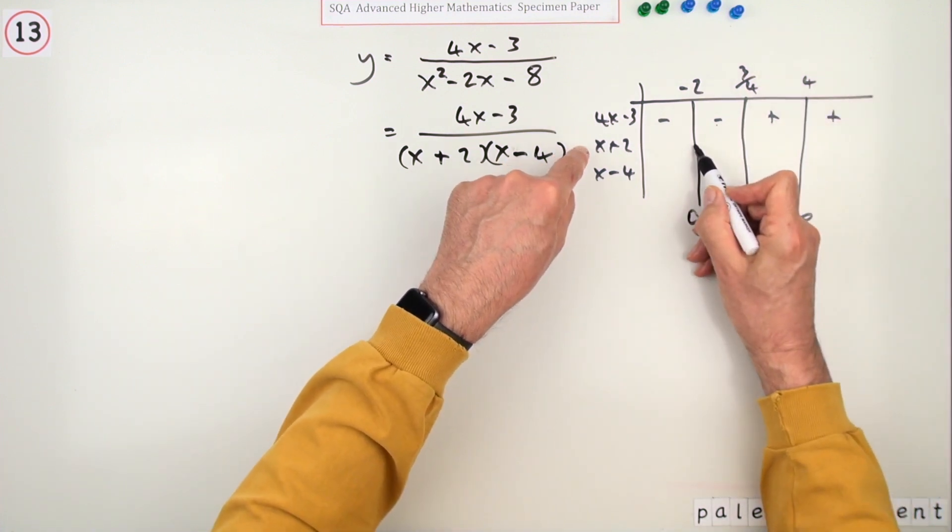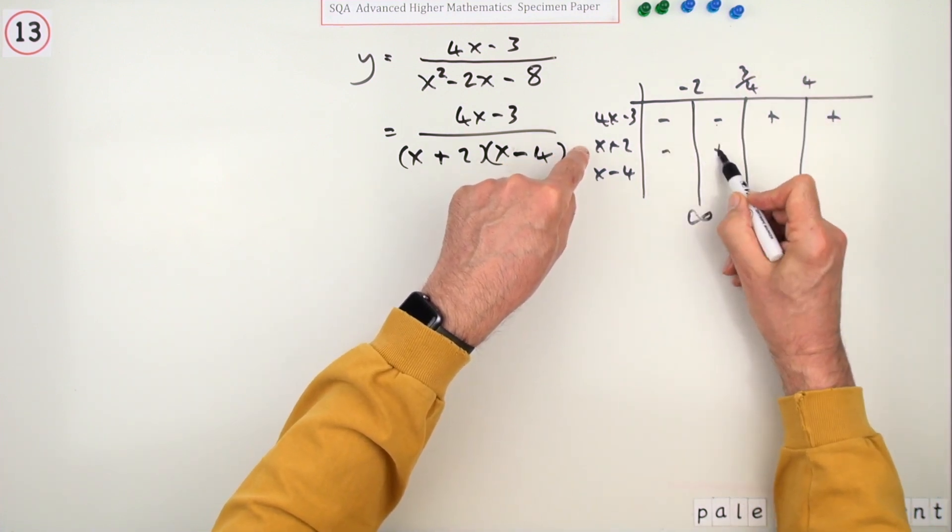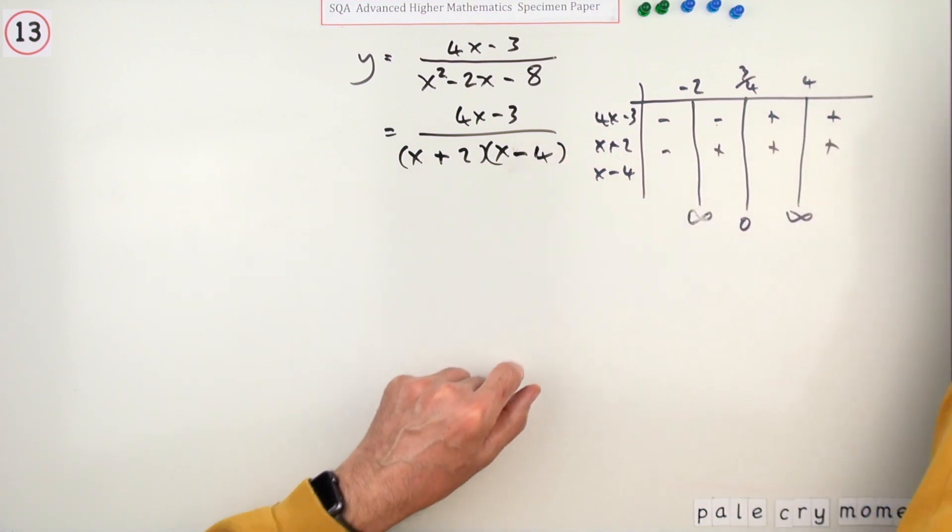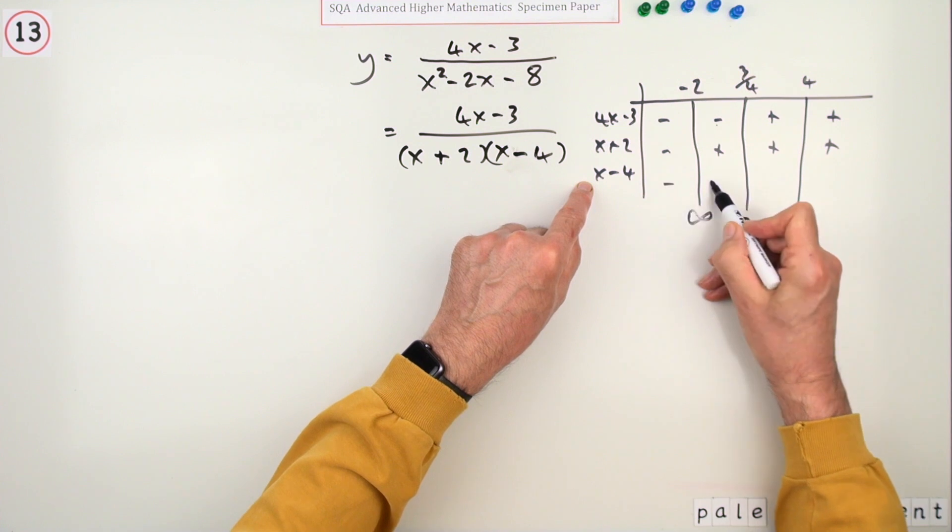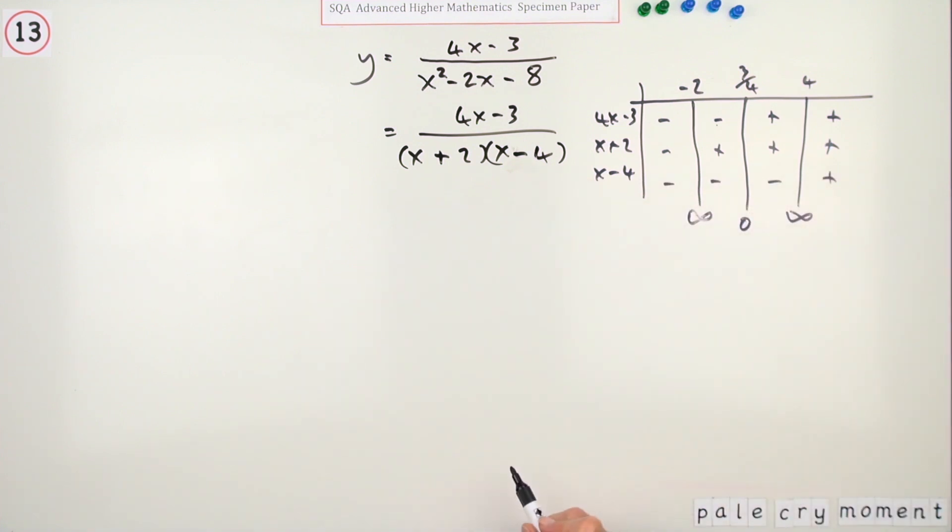x plus 2 is zero in this line. It'll be negative before, it'll be positive afterwards. x minus 4 is zero in this line. It'll be negative before, it'll be positive afterwards.